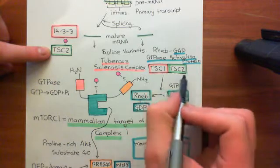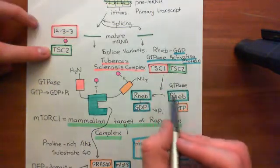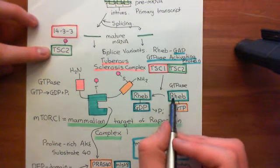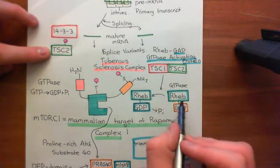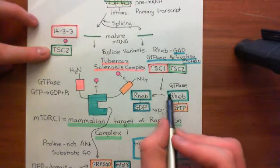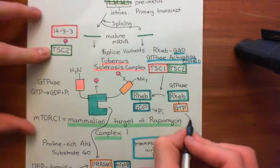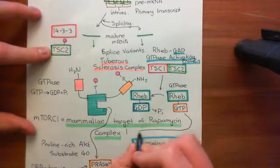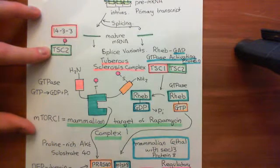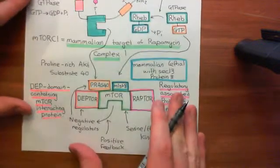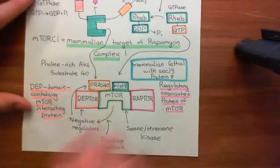So now you don't get tuberous sclerosis complexes forming, and therefore you don't get them activating RHEB monomeric G proteins to turn themselves off. RHEB monomeric G proteins in the on state build up within the cytoplasm, and somehow RHEB in the on state activates mTORC1 assemblies.